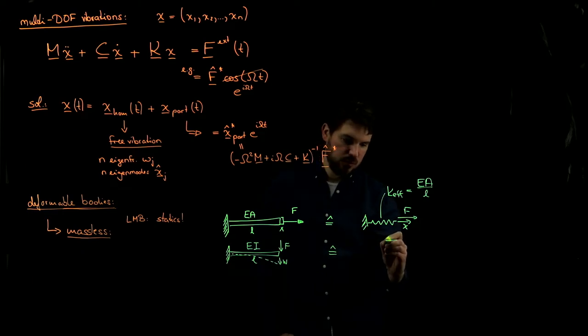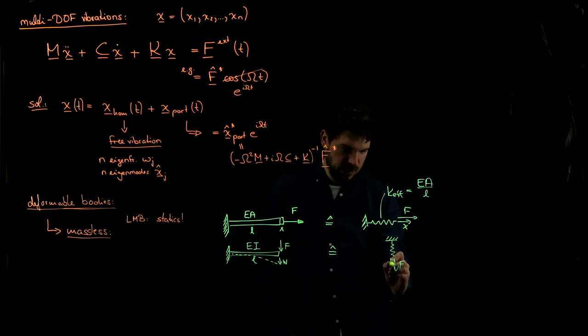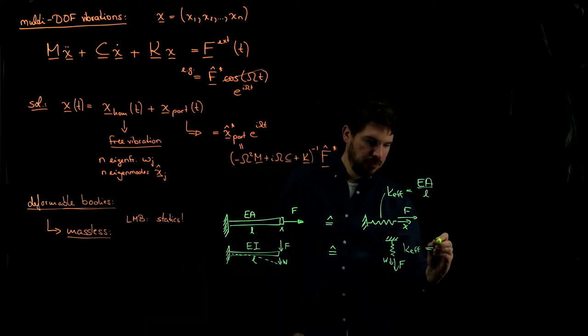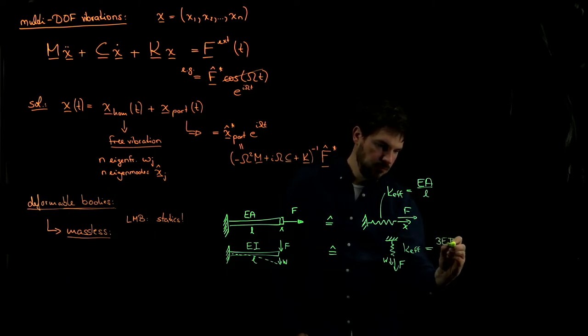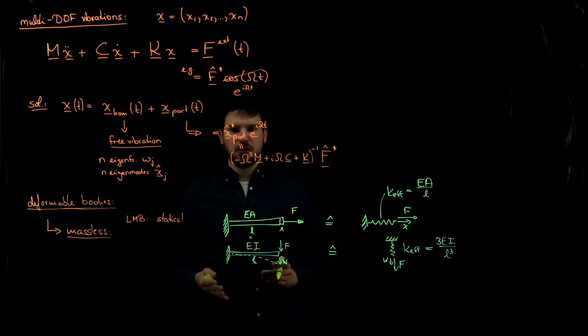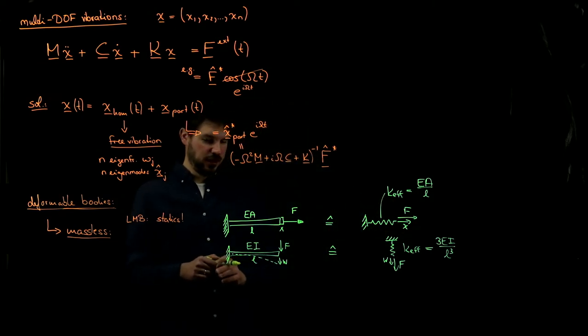Because we're in statics, we can reuse the equation that we've known since mechanics 2. Namely, in this particular case, we can replace this by a spring, which if a force F is applied, it's moving down by W. And the k effective in this particular case is 3EI over L cubed. Now where do these numbers come from? They come from statics, they come from mechanics 2, and hopefully you remember those. If not, you can find them in the formula collection.